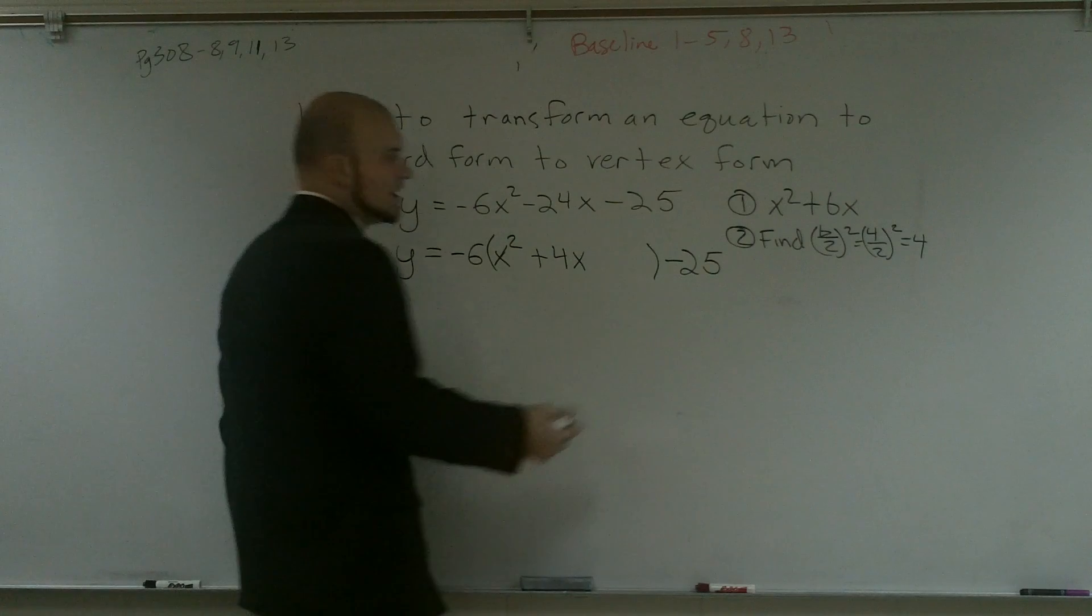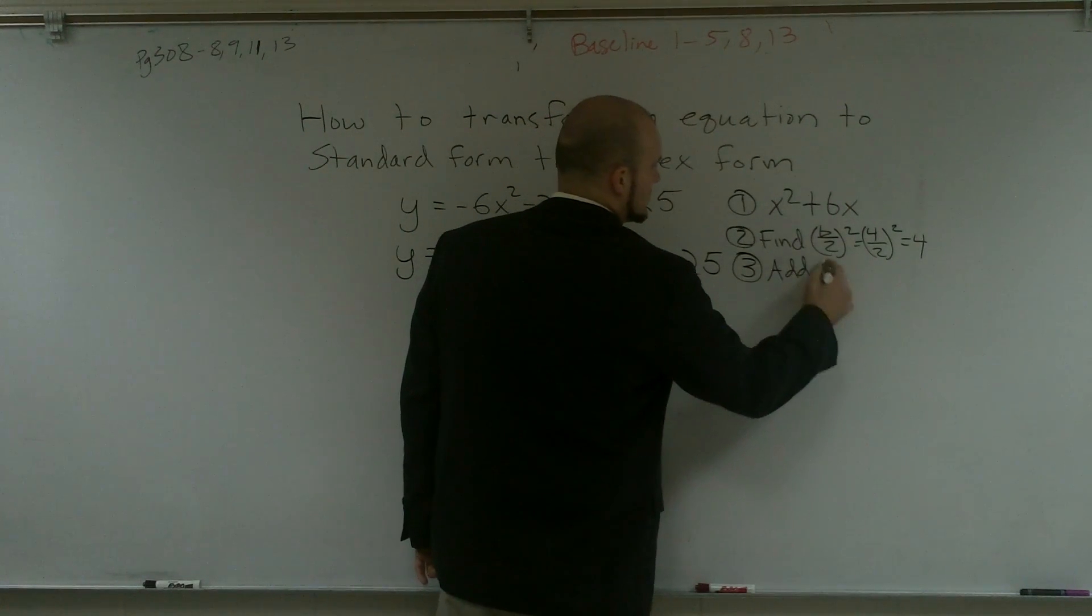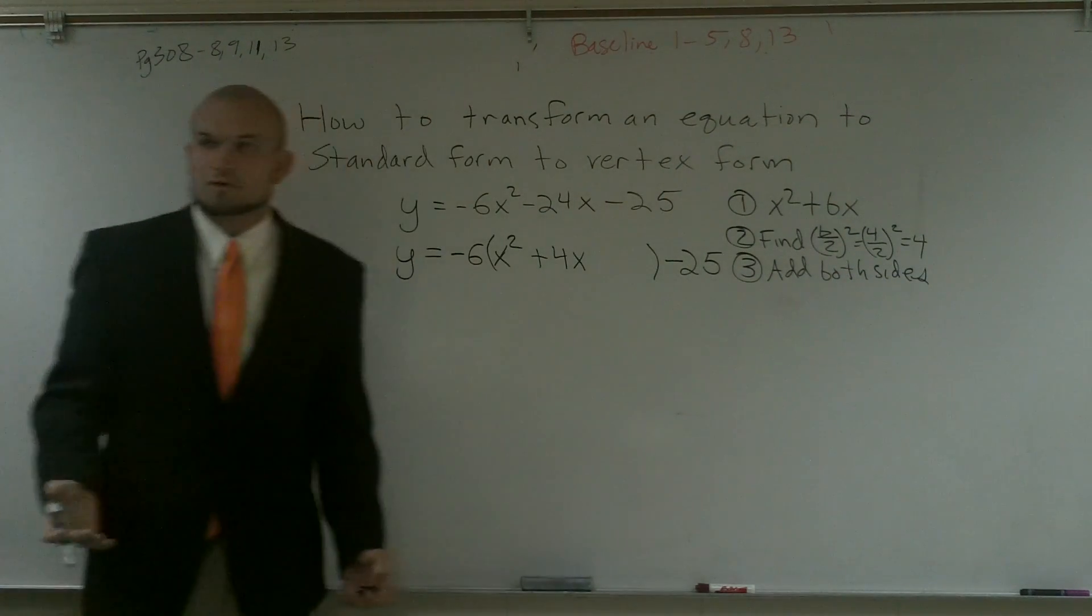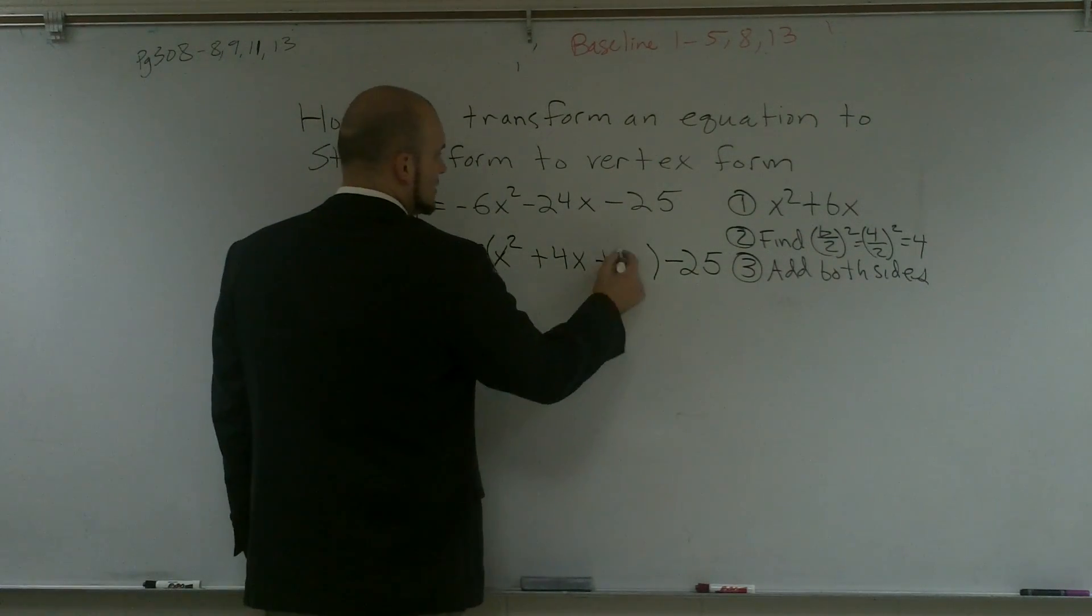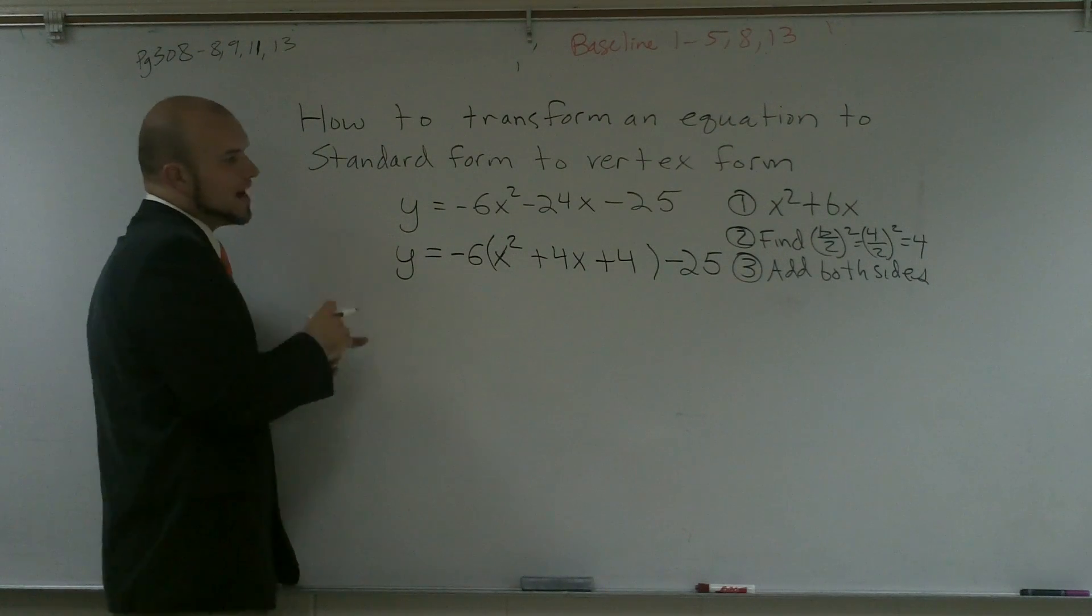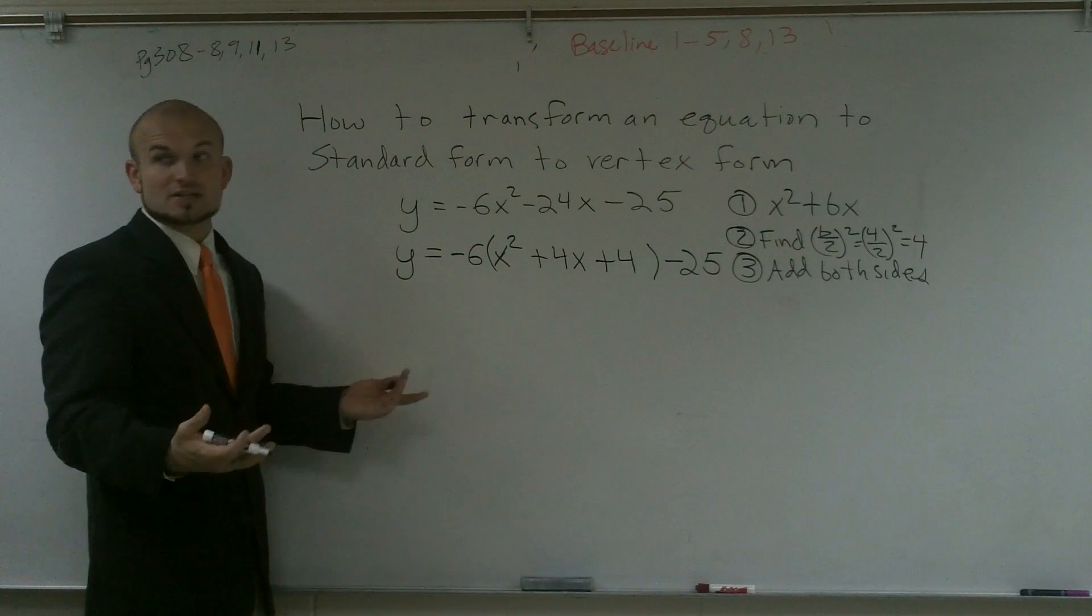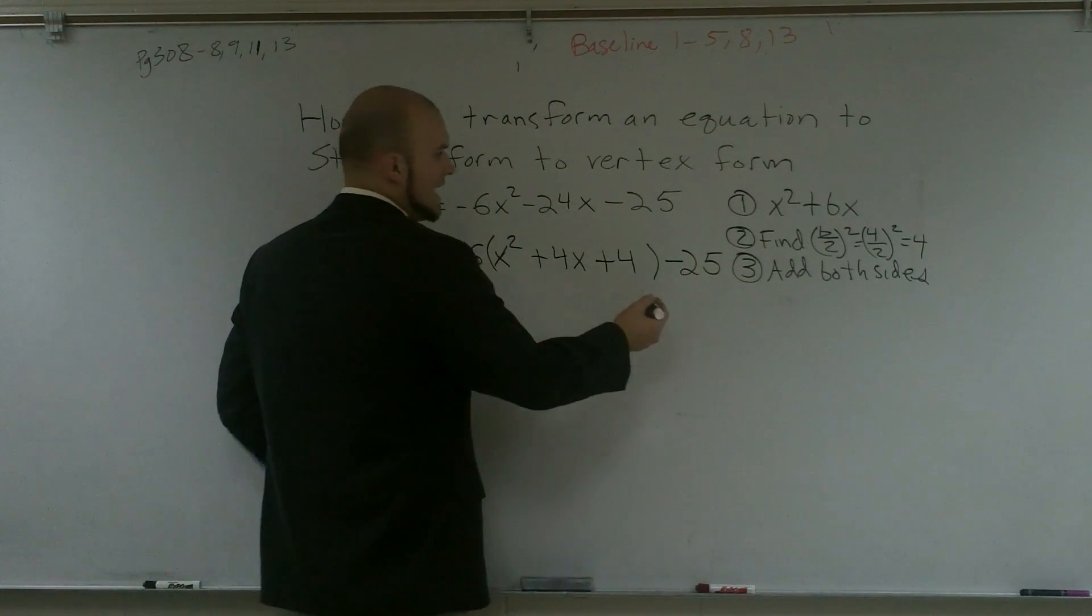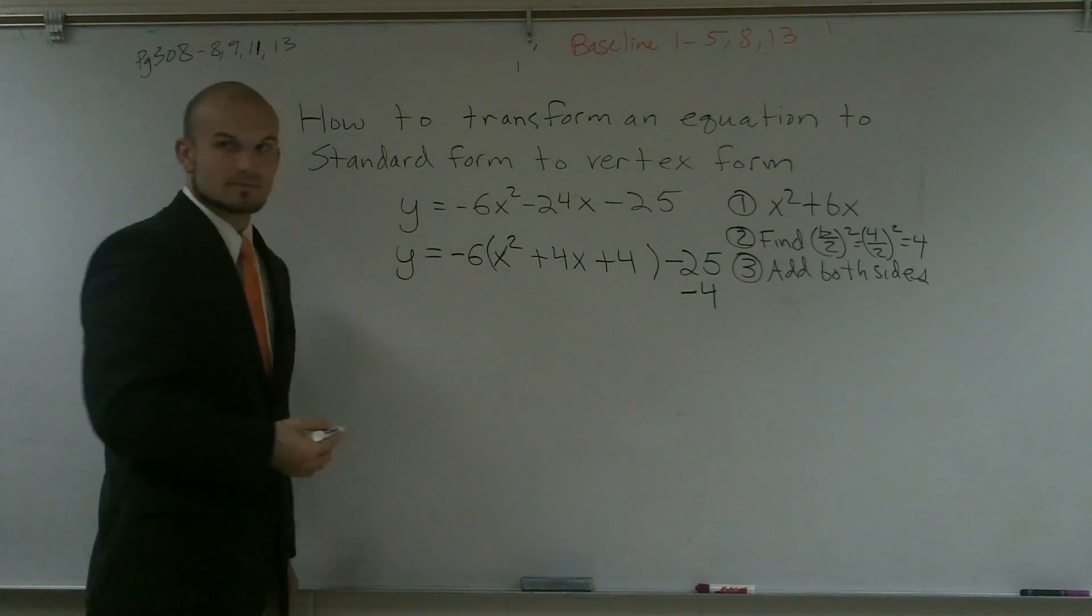Now, the next step that I've always done is add to both sides. Because in previous videos, what we've worked on before is we've worked on solving. And when you're solving, you want to add 4 to one side and add it to the second side. However, in this problem, we're not solving for a particular variable. We're just trying to change the format. So rather than adding to both sides, I'm just going to add and subtract it to the same side.